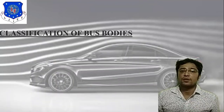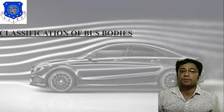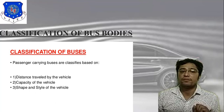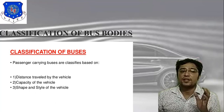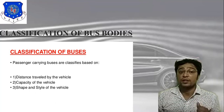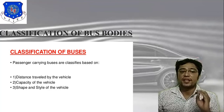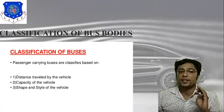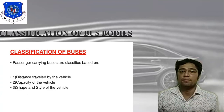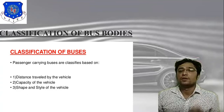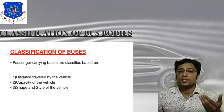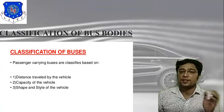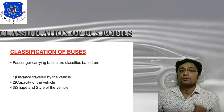The next topic is the classification of bus bodies. Passenger-carrying buses are classified based on three parameters: first, the distance traveled by the vehicle; second, the capacity of the vehicle; and third, the shape and style of the vehicle. According to these three parameters, different types of bus bodies are classified.